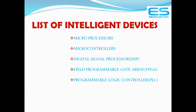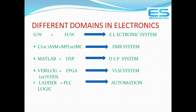People use these intelligent devices to develop their systems. Based on the software and hardware combination, electronic domains are categorized. For microprocessors and microcontrollers, the language is Assembly (ASM) or C — this combination becomes an embedded system. For DSP, the language is MATLAB — this combination becomes a DSP system. For FPGA, the language is VHDL — this combination becomes a VLSI system. For PLCs, ladder logic or function blocks are used — this combination becomes an automation system.